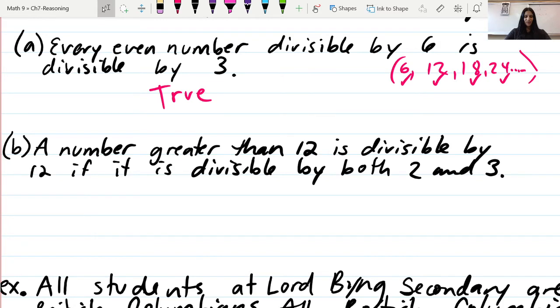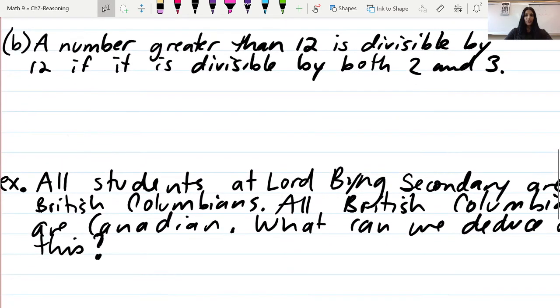The next one: A number greater than 12 is divisible by 12 if it is divisible by both two and three. Let's think about this. A good way to approach this is: can I think of a number bigger than 12 that's divisible by two and three but isn't divisible by 12?